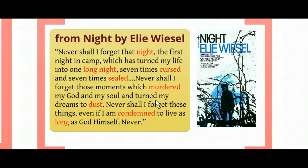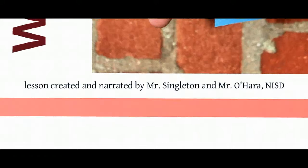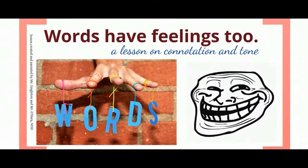When you look at even just a few sentences from Wiesel and look at them all together — all those words with all their connotations together — it creates an overall tone in the author's writing. We could describe that tone as dark, depressing, sad, or intense. That's how connotation works to show tone. So you should understand now what connotation is, that words have feelings too, and how the feelings of specific words can give us ideas about what the tone of a piece of writing is.